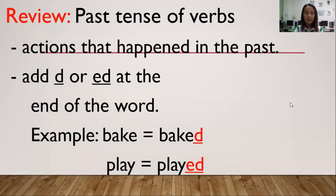Our last topic is about past tense of verbs. Past tense of verbs are actions that happened in the past. If we say past, like yesterday, last night, last time, last month, last week, or last year, it adds -d or -ed at the end of the word. For example, the past tense of 'bake' is 'baked' — we add -d at the end. Next, 'play' becomes 'played' — this time we add -ed at the end.